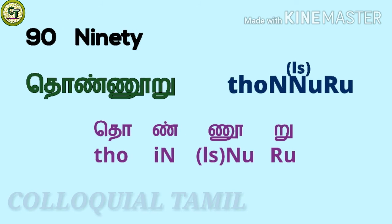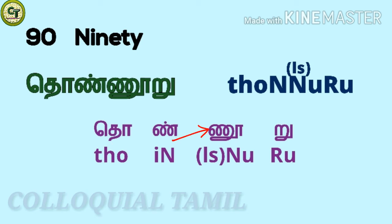For 90: a short vowel letter; in — a consonant; no — a long vowel letter; ru — a short vowel letter; together: 90.